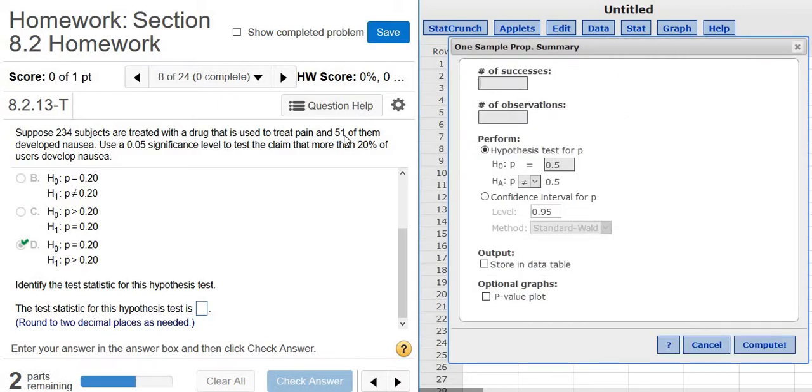Successes, that's going to be the 51. Success is developing nausea in this problem. Observations is 234. And then right here, here's our null and alternate hypotheses. It just has to match what's here in the problem. So we enter 0.20, and we change this to greater than. Click Compute.